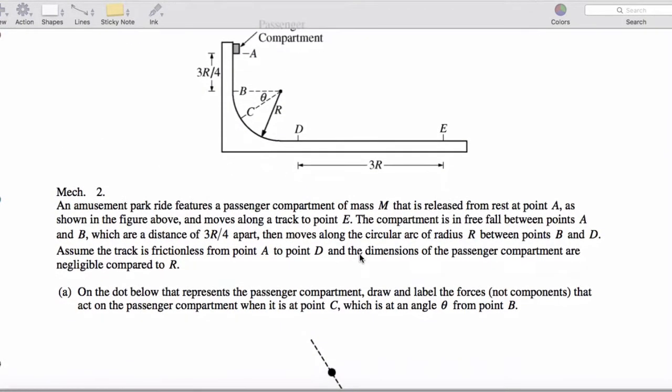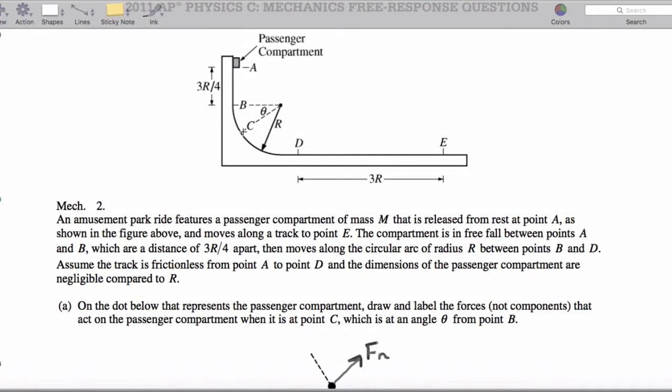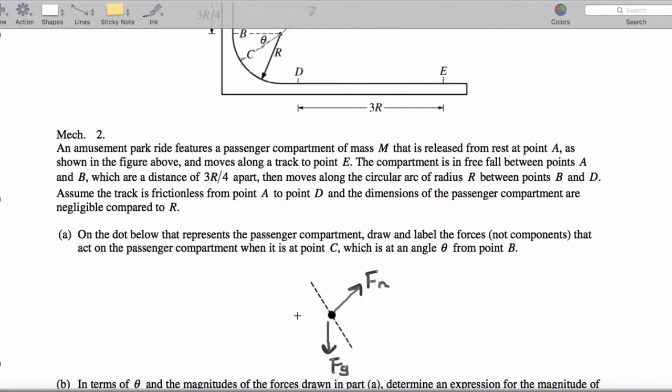This problem has a little bit of centripetal acceleration, and we're going to be careful on the force components here. So, first, we have the weight pointing down, and we have a normal force pointing up. The component of force that keeps this moving in a circle points this way, and the other component of the force is what makes the object speed up.